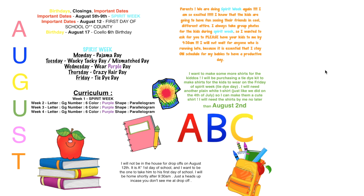For the month of August, obviously it's back-to-school month. That's why I have a lot of pencils, apples, and colorful colors — because when I think of back to school, I think of a lot of color. So that's why I have the colorful backpack, and the word August is colorful as well. I normally do a vertical newsletter, but this month I wanted to do a horizontal one and have 'August' going down the side instead of across the top.